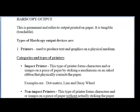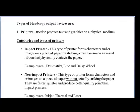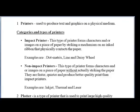There are various types of hard copy output. The main one is the printer — printers are used to produce text and graphics on a physical medium. There are two main categories of printers: impact printers and non-impact printers. An impact printer is a type of printer that forms characters or images on paper by striking a mechanism on an inked ribbon that physically contacts the paper. It has three types: dot matrix, line, and daisy wheel, though the daisy wheel has now become obsolete.